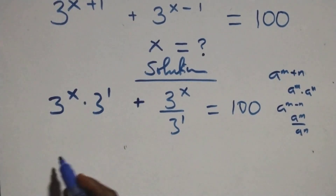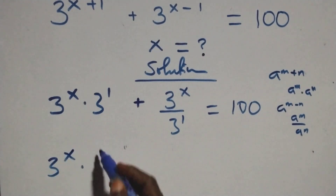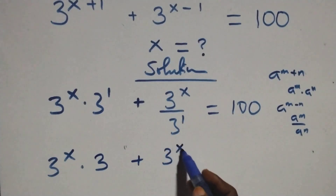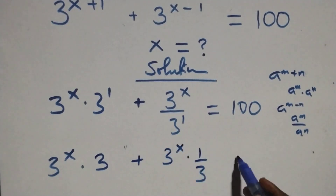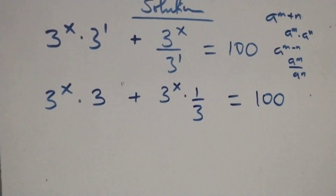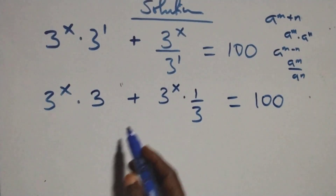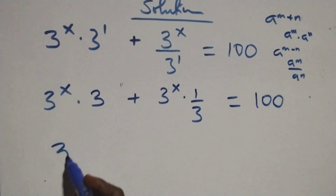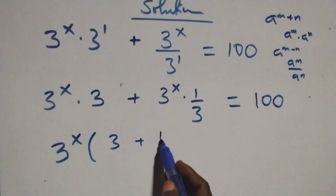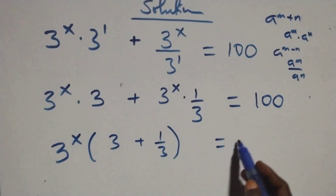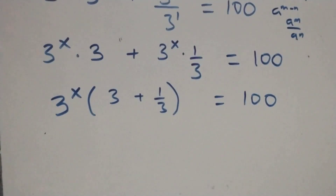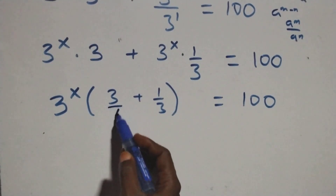Then here we can write this as 3 raised to power x times 3 raised to power 1, that's 3, then plus also here we have 3 raised to power x times 1 over 3, then equals to 100. From here we have 3 raised to power x, and we have 3 raised to power x times 3 plus 1 over 3.